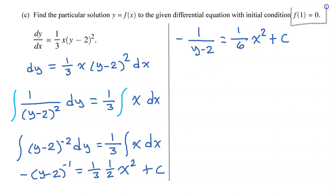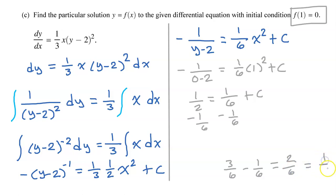Now let's use the initial condition to find the value of c. This is telling us that y is 0 when x is 1. So let's make those substitutions for x and y. So now we have this. But negative 1 divided by negative 2 simplifies to positive 1/2. 1 squared is 1. So on the right side, we just have 1/6 plus c. Now let's subtract 1/6 from both sides of the equation. 1/2 minus 1/6 is the same thing as 3/6 minus 1/6, which is 2 over 6, which reduces to 1/3. So c is equal to 1/3.